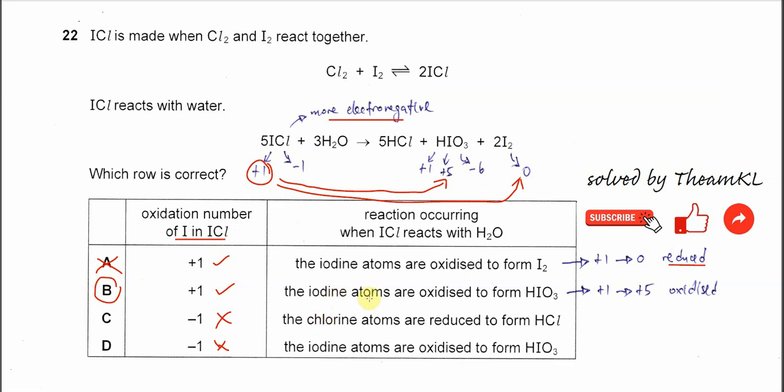Okay, the iodine atoms are oxidized to form HIO3. Yes, because it's from positive one to positive five, so it can oxidize. That's all. Thank you.